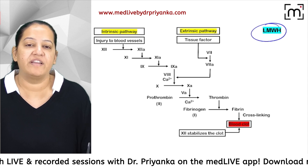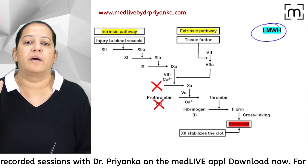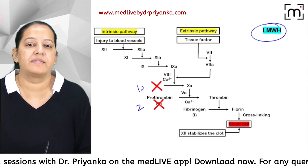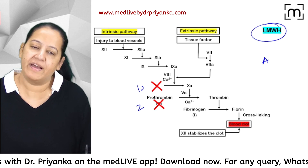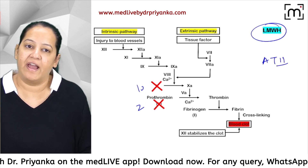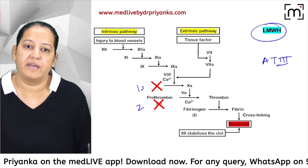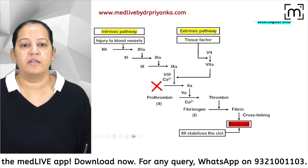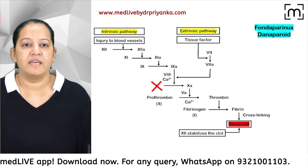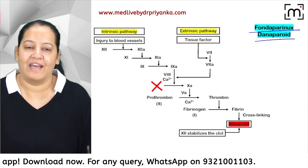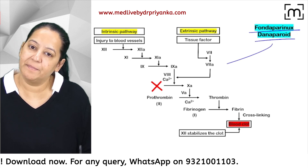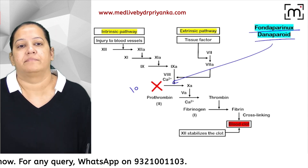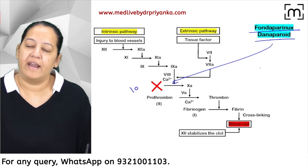Low molecular weight heparin inhibits only two factors: factor 10 and factor 2. It also acts indirectly via antithrombin 3 — not directly. The third indirect agent is fondaparinux and danaparoid, which inhibit only factor 10, again via antithrombin 3.